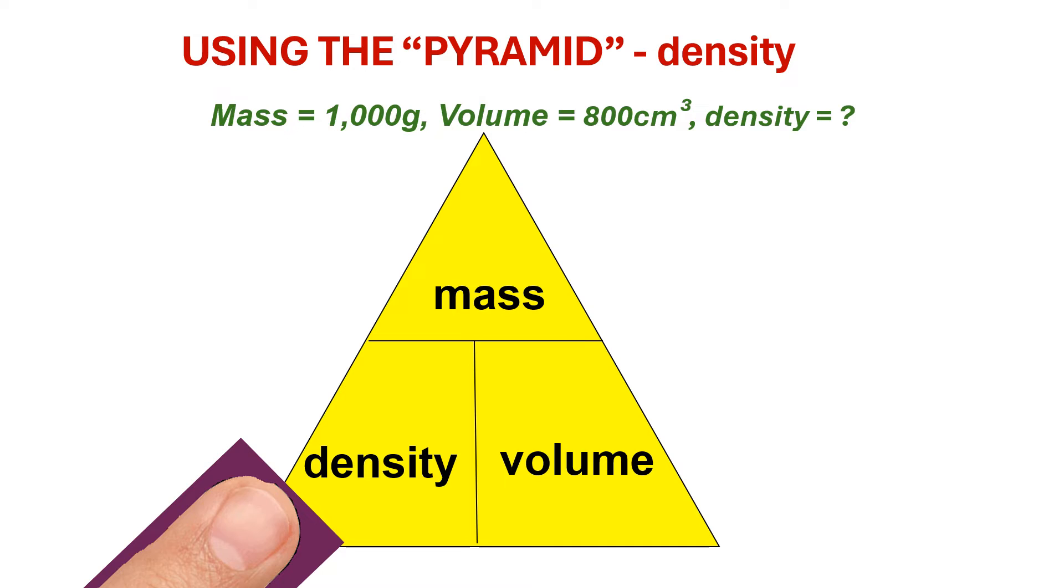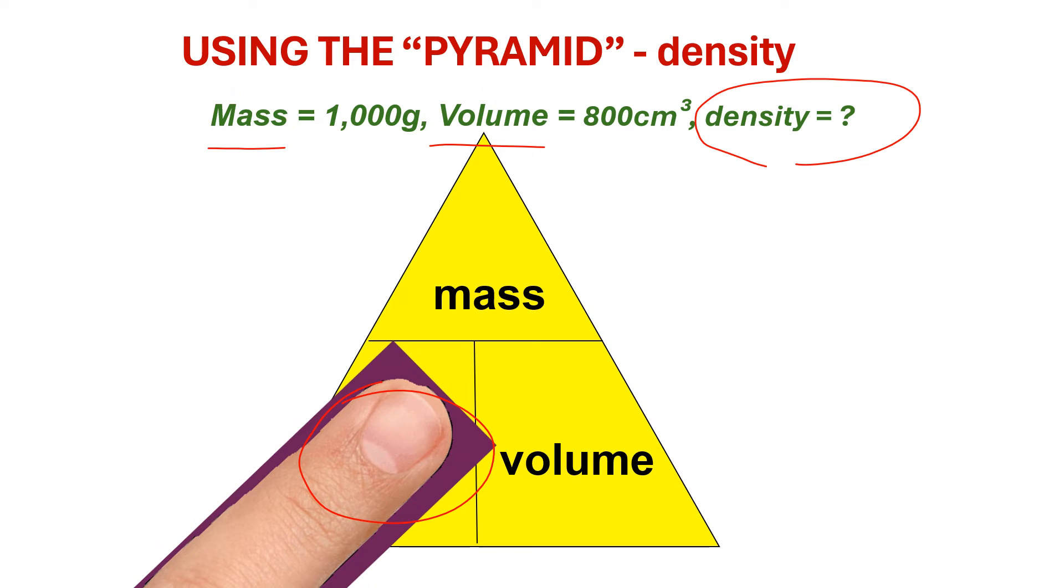So step one, we need to determine which of these three variables are we trying to calculate. We know mass, we know volume, we're trying to calculate density. So therefore we cover that up with our finger on the pyramid. And that leaves us with mass over volume, m over v.